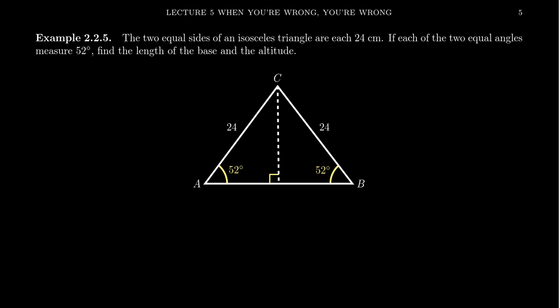Recall what is an isosceles triangle. An isosceles triangle is a triangle with two sides that are congruent to each other. So for this diagram, let's say we have triangle ABC, which is isosceles, and side length AC is congruent to side length BC. Let's say that both of these congruent sides are equal to 24 centimeters in length.